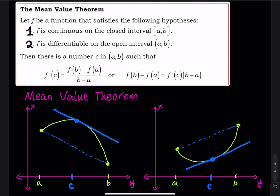This is an extension of Rolle's Theorem. Rolle's Theorem requires f(a) equals f(b), which means you can draw a horizontal line to connect a and b. But the Mean Value Theorem does not say anything about f(a) and f(b).